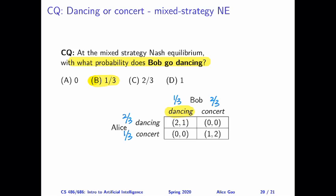Here are the correct answers, labeled around the utility matrix. For Alice, she goes dancing with probability two-thirds and goes to a concert with probability one-third. For Bob, he goes dancing with probability one-third and goes to a concert with probability two-thirds. This is the mixed strategy Nash equilibrium. Notice something interesting: each player is going to their preferred option — taking their preferred action with higher probability. Alice is going dancing more, whereas Bob is going to a concert more.